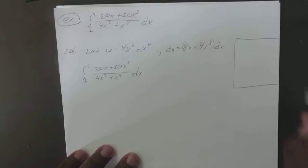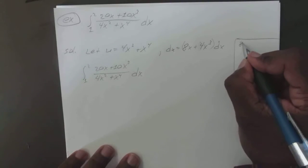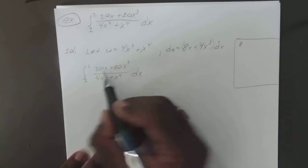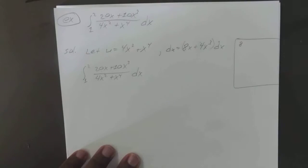So the way I did it, let's say you want to somehow make that 8x equal 20x and this 4 equals 10.